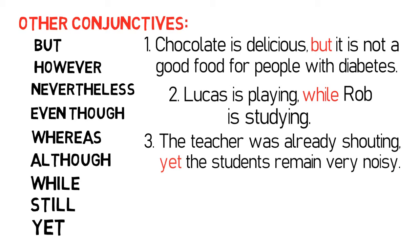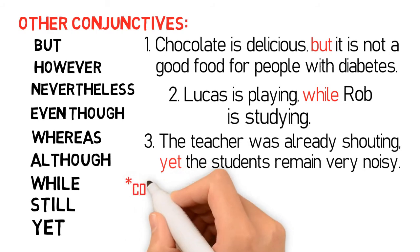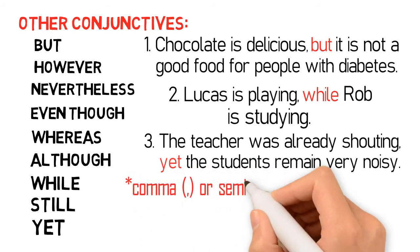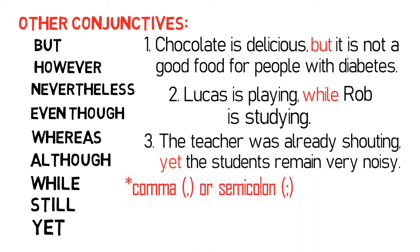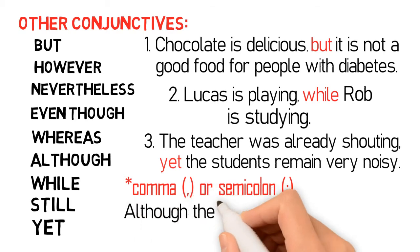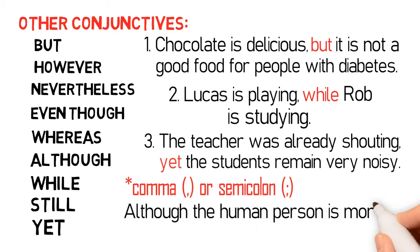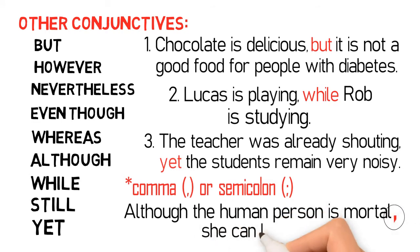In cases where there are no words that signify a conjunction, a comma or semicolon may indicate that the statement is a conjunction. Consider this: 'Although the human person is mortal, she can live long.'